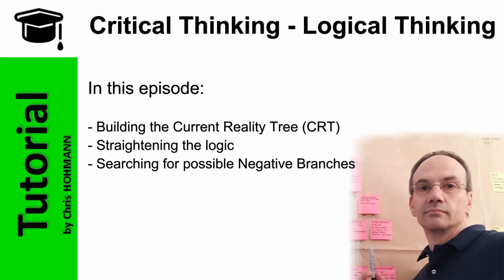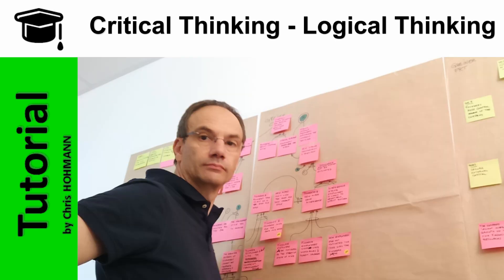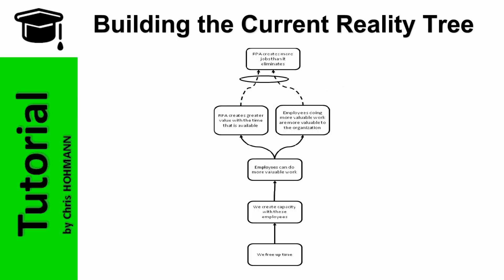I am Christian Hohmann, welcome to this episode. So, if we translate the vendor's answer into a current reality tree, it would look like this. It starts at the bottom with the first entity stating, if we free up time, then we create capacity with these employees, implying those employees relieved by the help of RPA.